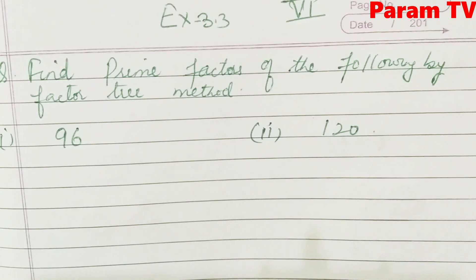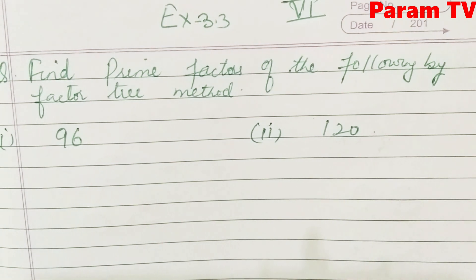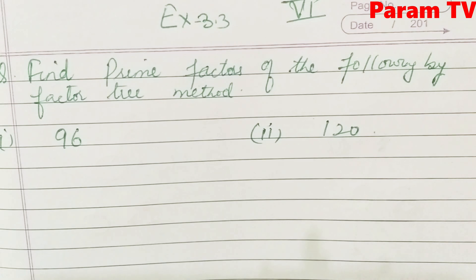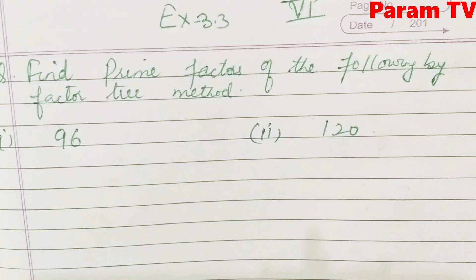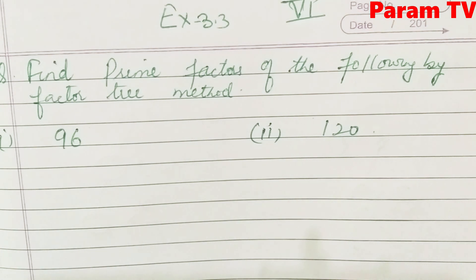Prime numbers — I hope you remember those numbers. Since you are studying mathematics, what is the definition of prime numbers? The numbers which have no other factor; only 1 and itself are the factors. In other words, there are no other factors. Simply put, we say that they don't come in any multiplication table.